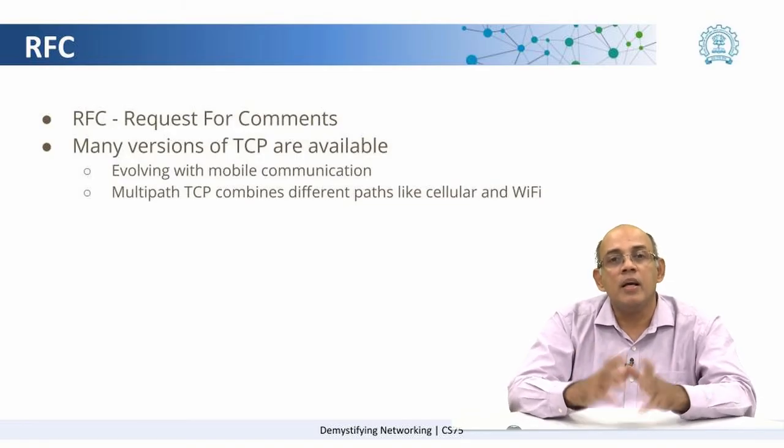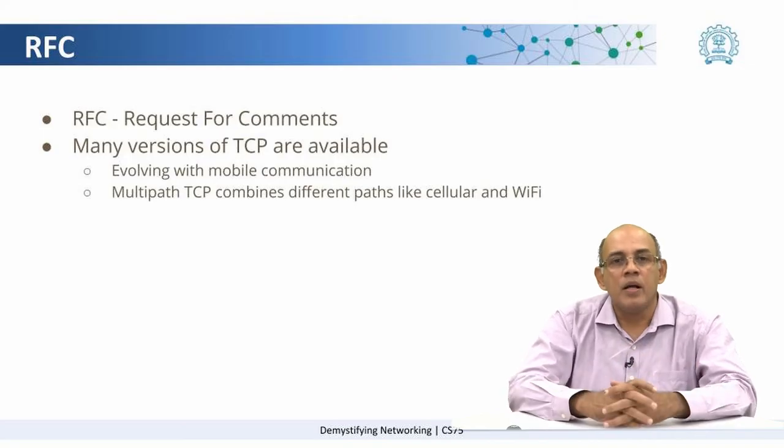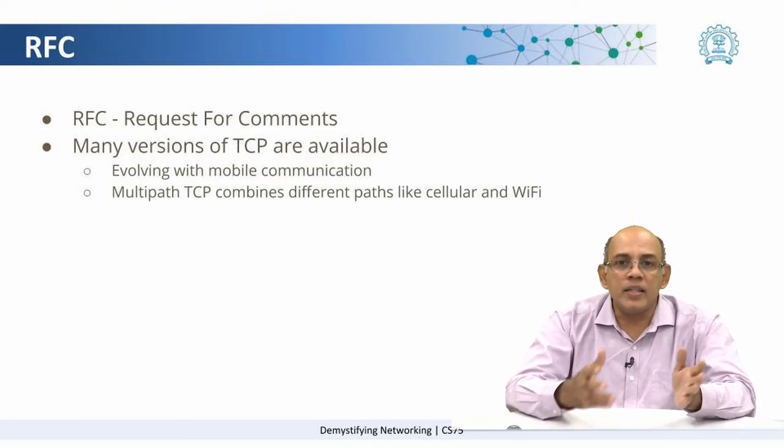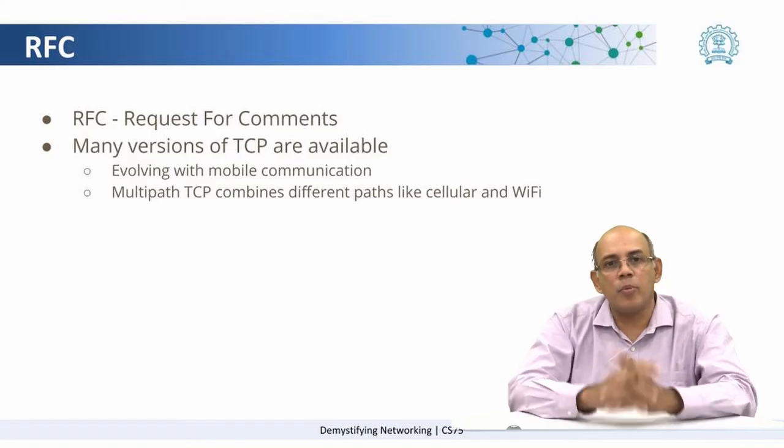You will find multiple versions of TCP if you search for RFCs on the internet. TCP, for example, is evolving with current technologies like mobile devices. Since it uses only one path for communication, if you have a phone with both Wi-Fi and a cellular data connection, TCP typically uses only one of them. However, newer versions called Multipath TCP (MTCP) attempt to send some data through the cellular link and some through the Wi-Fi link, then merge them together. You can read the provided resource about MTCP and then answer the third question.